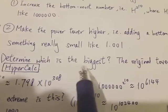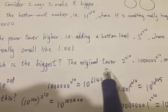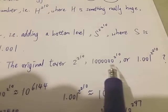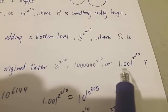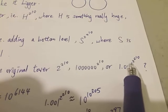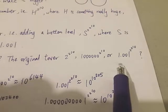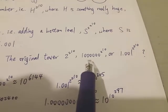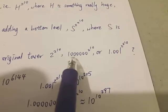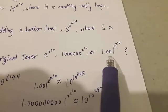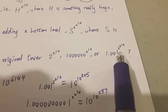So now determine which one is the biggest. Is it the original tower 2 to the 2 to the 10? Or a million to the 2 to the 10? Or 1.001 to the 2 to the 2 to the 10? Which one do you think is the biggest and which one is the smallest? We can easily tell one comparison, but the other is not so easy.